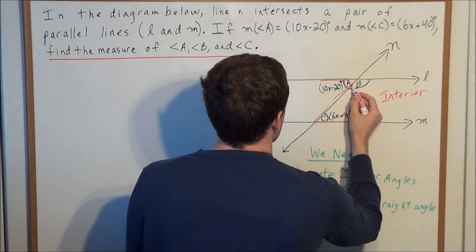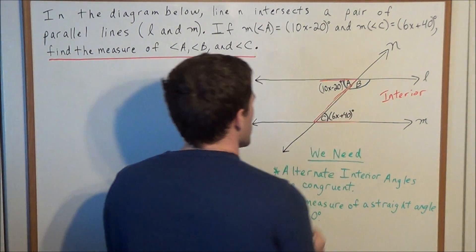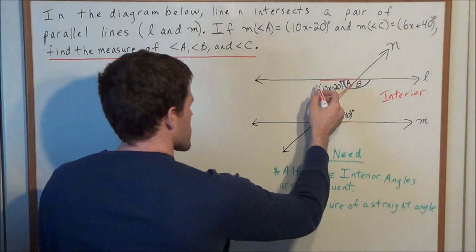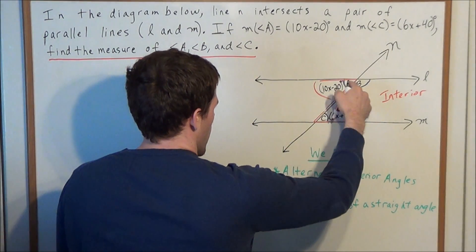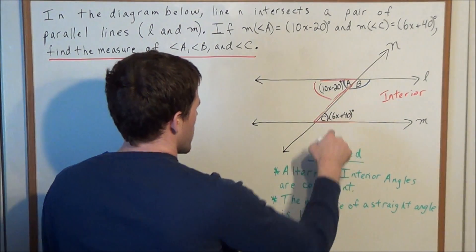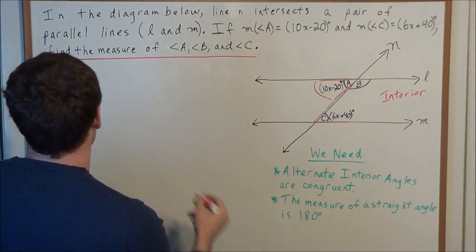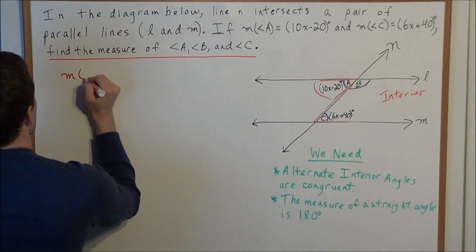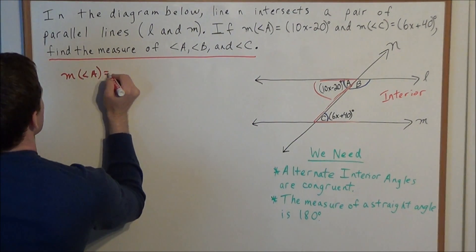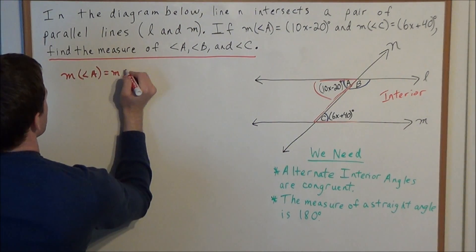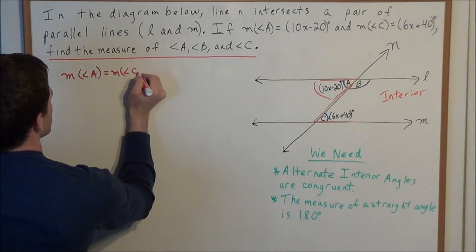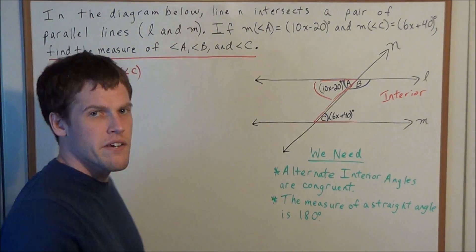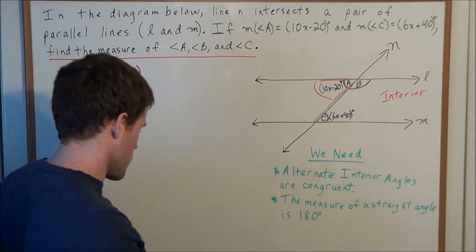When we draw in this Z shape, which angles are highlighted? In this case the angles highlighted are angle A and angle C. So we have the measure of angle A equals the measure of angle C, based on this alternate interior angles theorem.